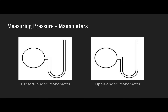Manometers come in two distinct varieties: closed-ended and open-ended. A manometer is made up of a glass bulb into which we inject a gas phase species, and a u-shaped glass tube — literally called a u-tube. The only difference between these two types is that the closed-end manometer has a u-tube which is sealed and not exposed to atmospheric air, whereas the open-ended manometer is open to the atmosphere and thus experiences atmospheric pressure on that side of the u-tube.